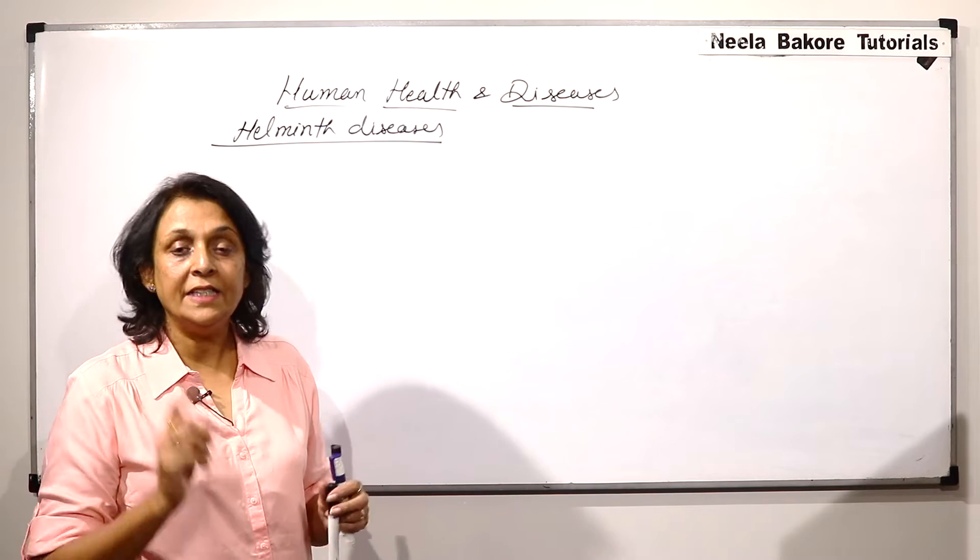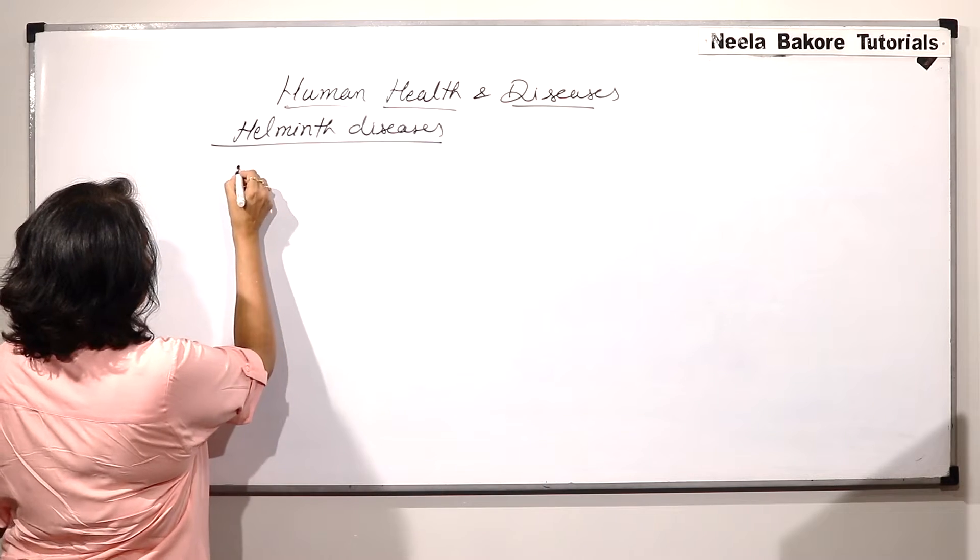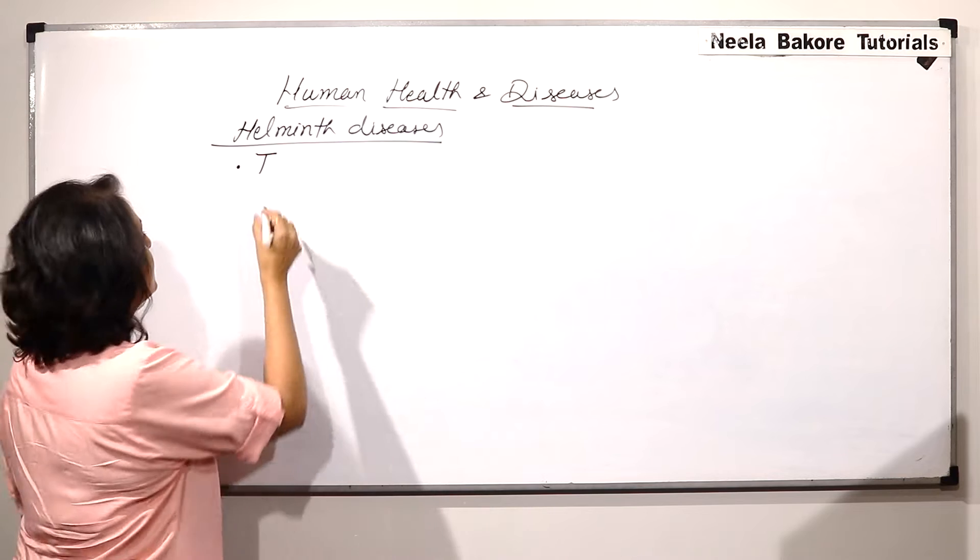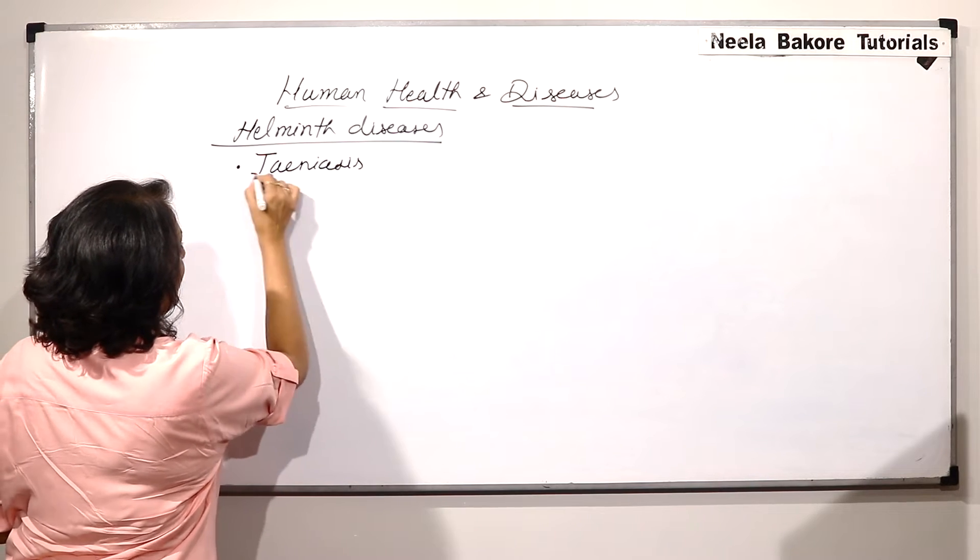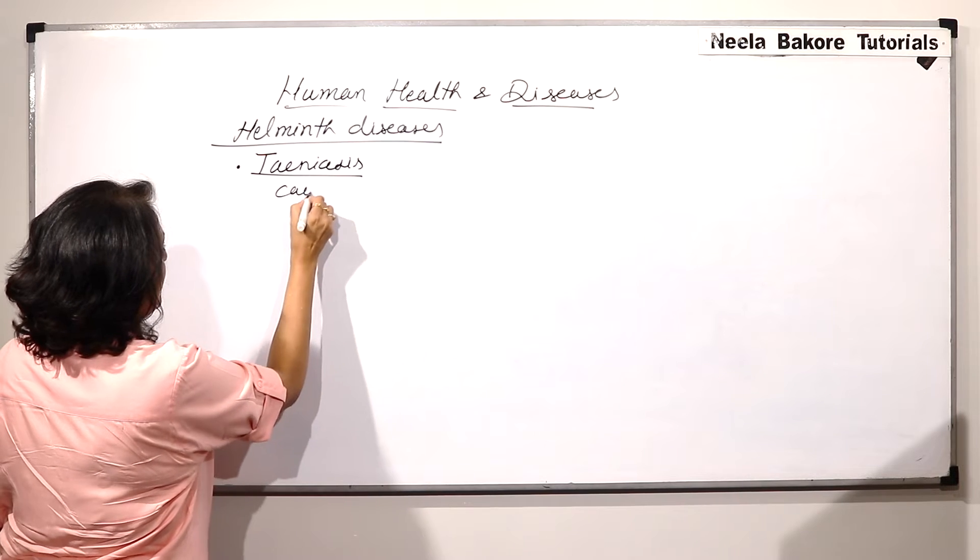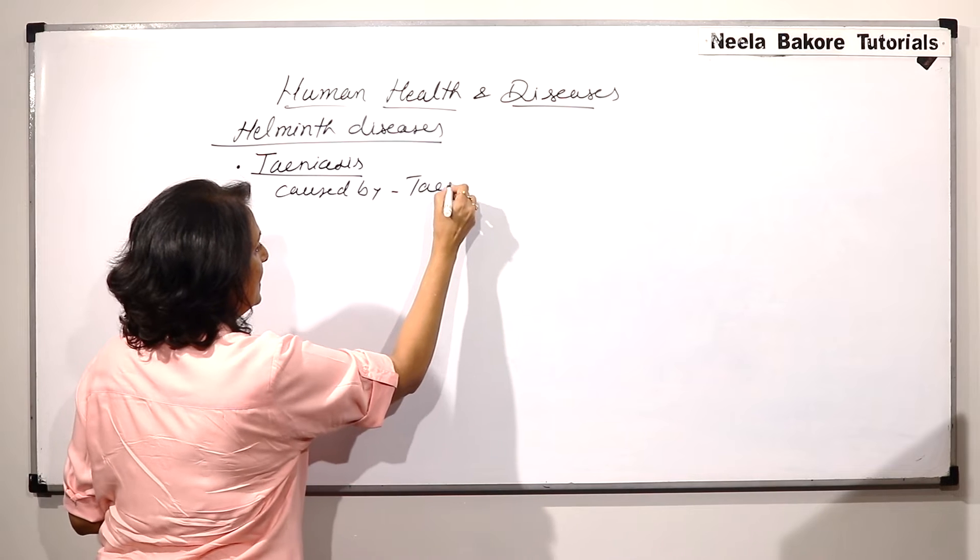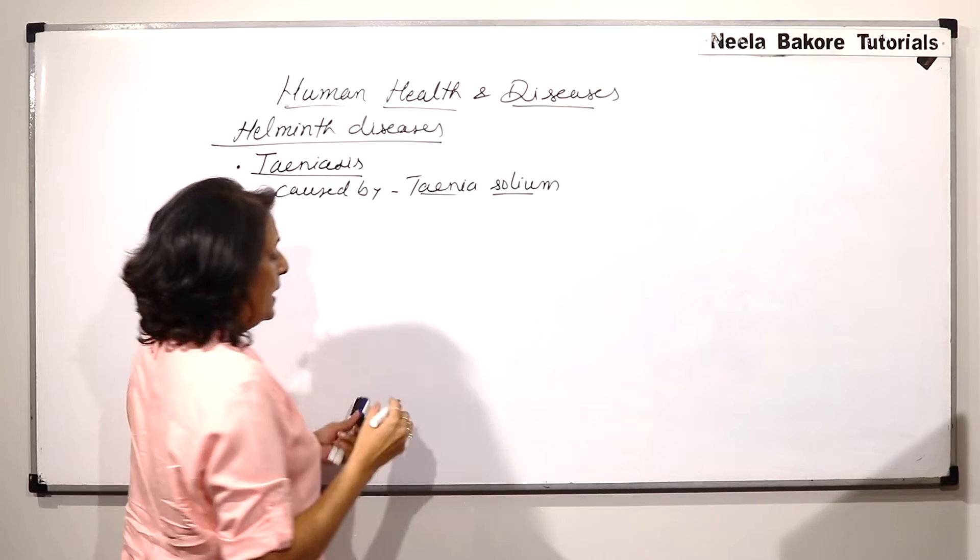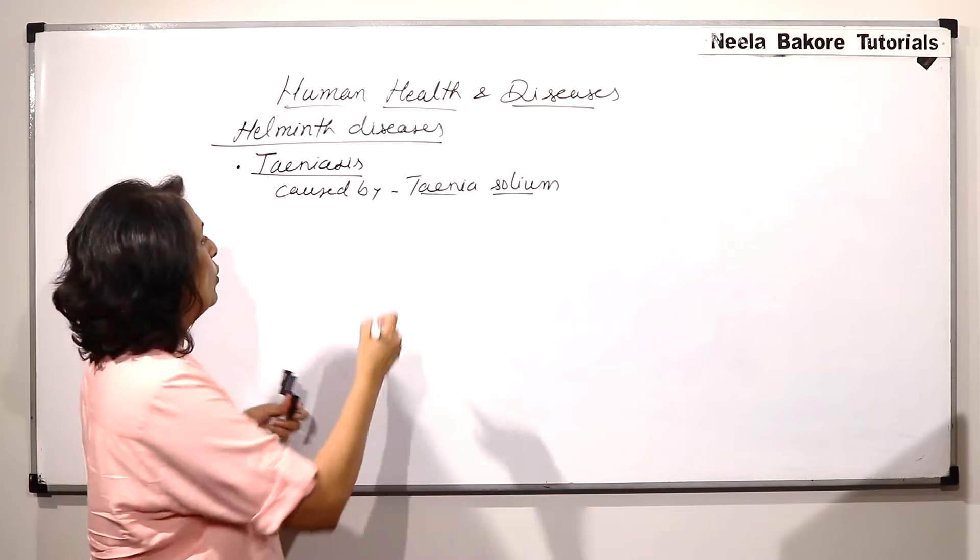One is Taenia solium which is in platyhelminth and the disease caused is called taeniasis. This is commonly known as tapeworm.